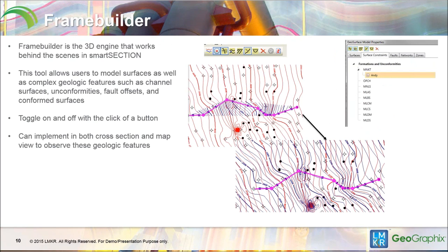Frame Builder is the 3D engine that works behind the scenes in Smart Section, used to model surfaces in Map View. If you don't have Frame Builder, surfaces will not be modeled. You can view channel surfaces, unconformities, fault blocks and their offsets, and any conformed surfaces. These are toggled on and off with the click of a button along the toolbar. These Frame Builder tools are implemented both in Map View and in Cross-Section View.